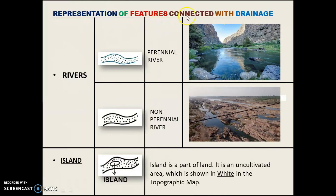For drainage features, rivers can be perennial or non-perennial. A perennial river is shown in blue; a non-perennial river is shown in black. An island is a part of land within a river — it is an uncultivable area not suitable for cultivation, shown in white on the topographic map. A river can be dry or can have water.